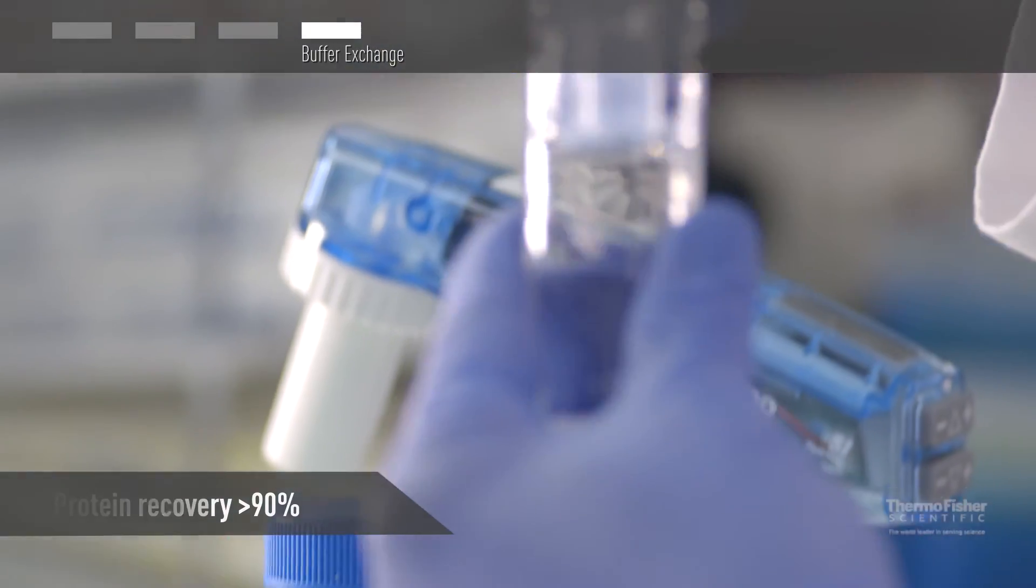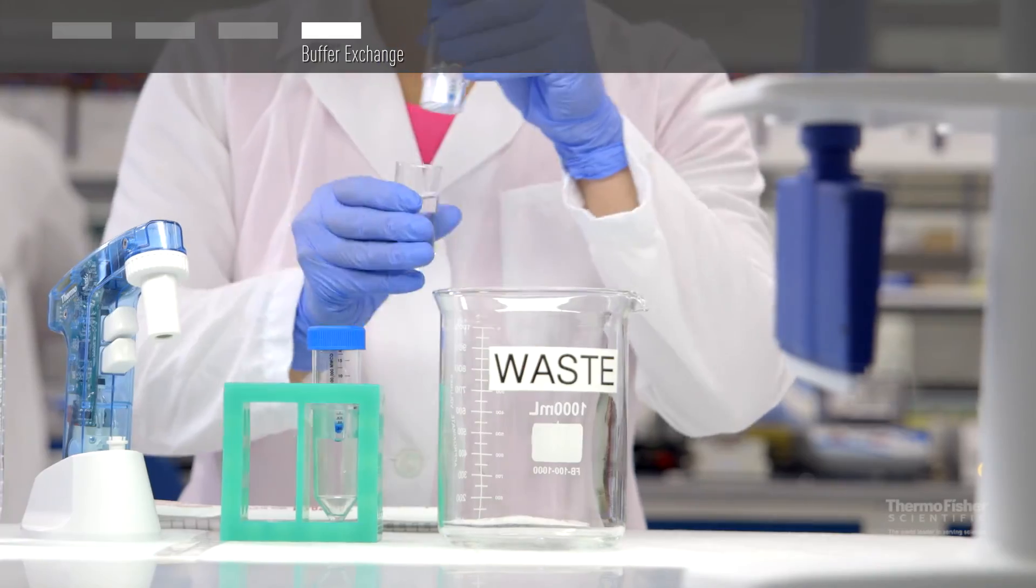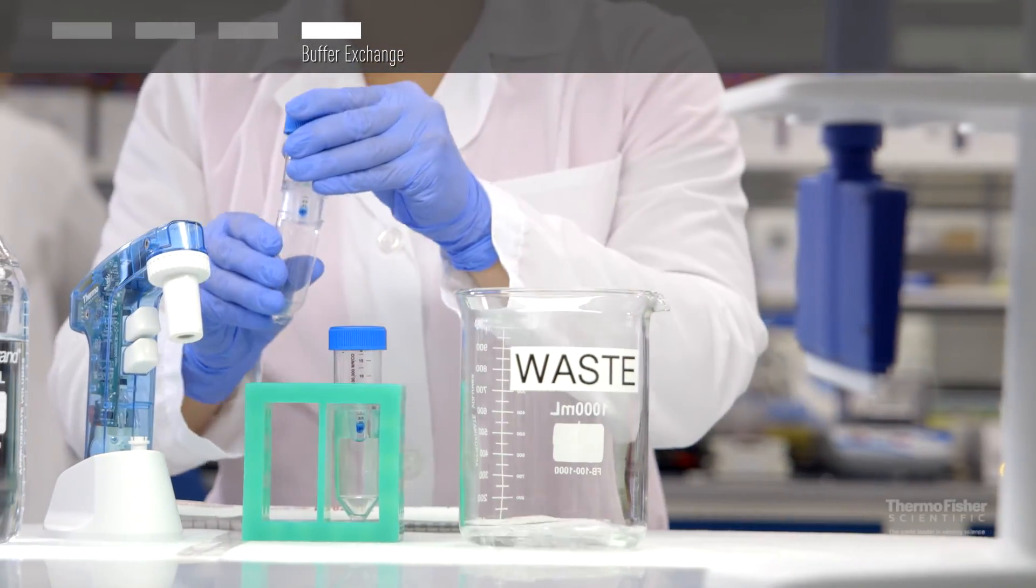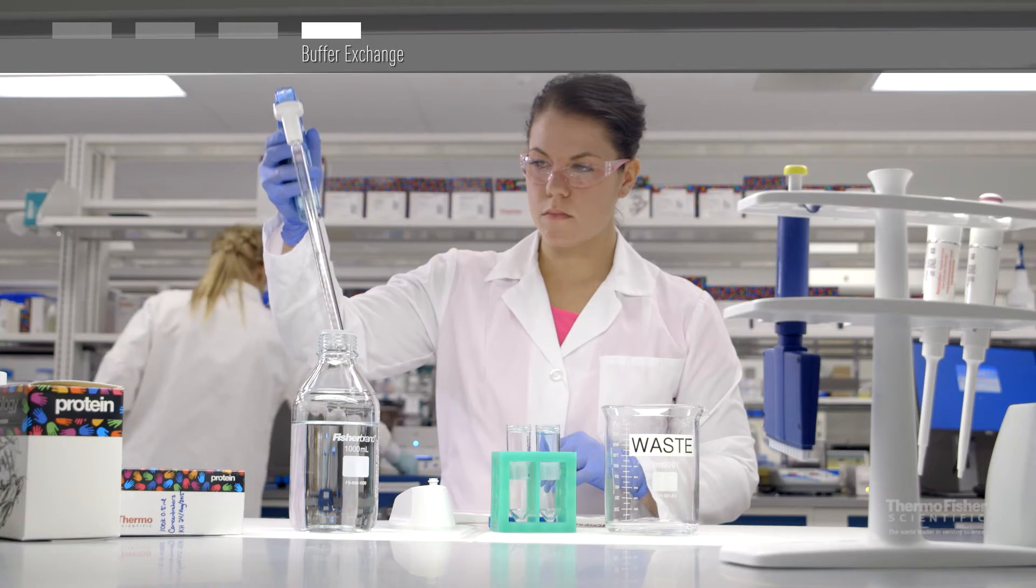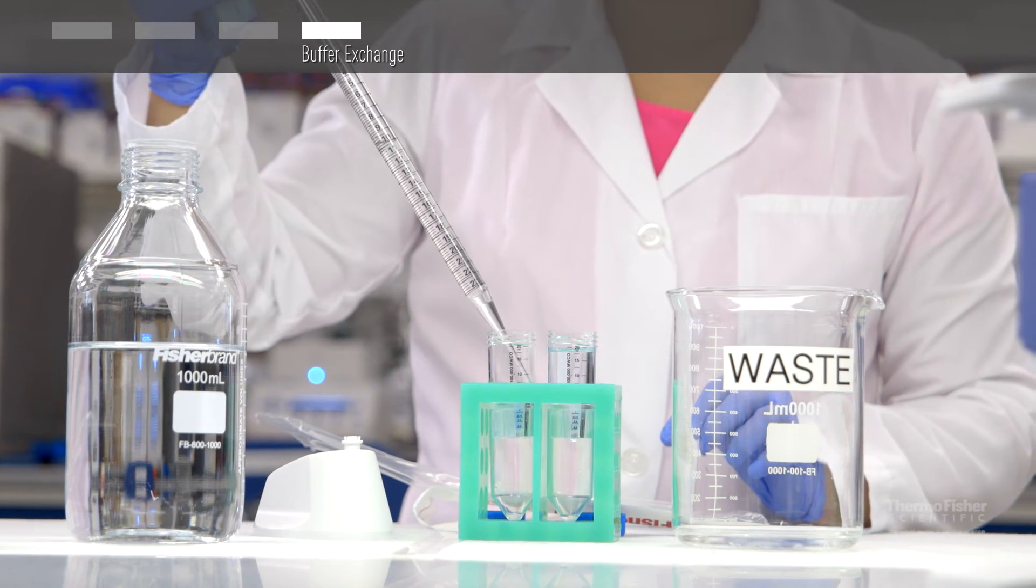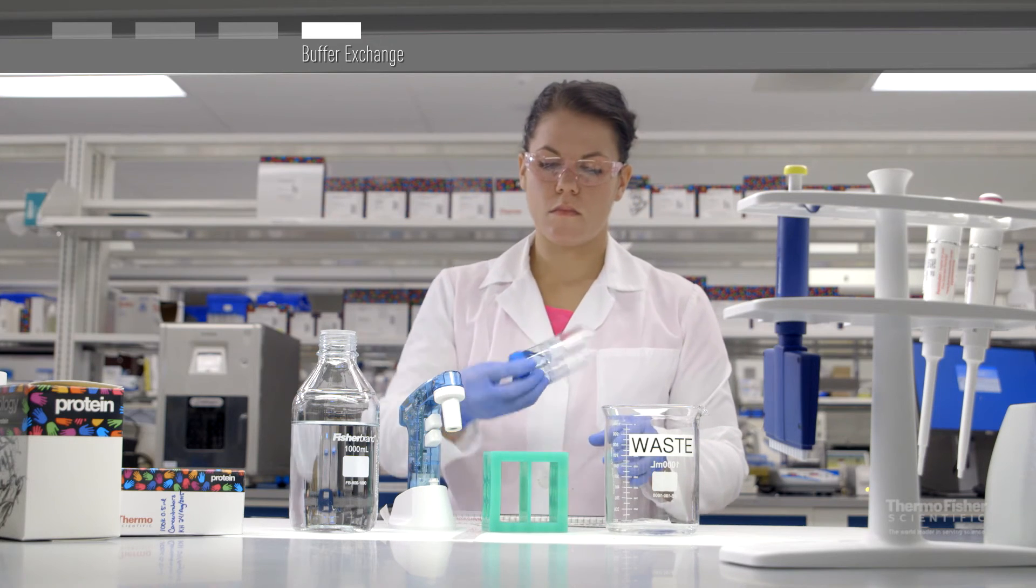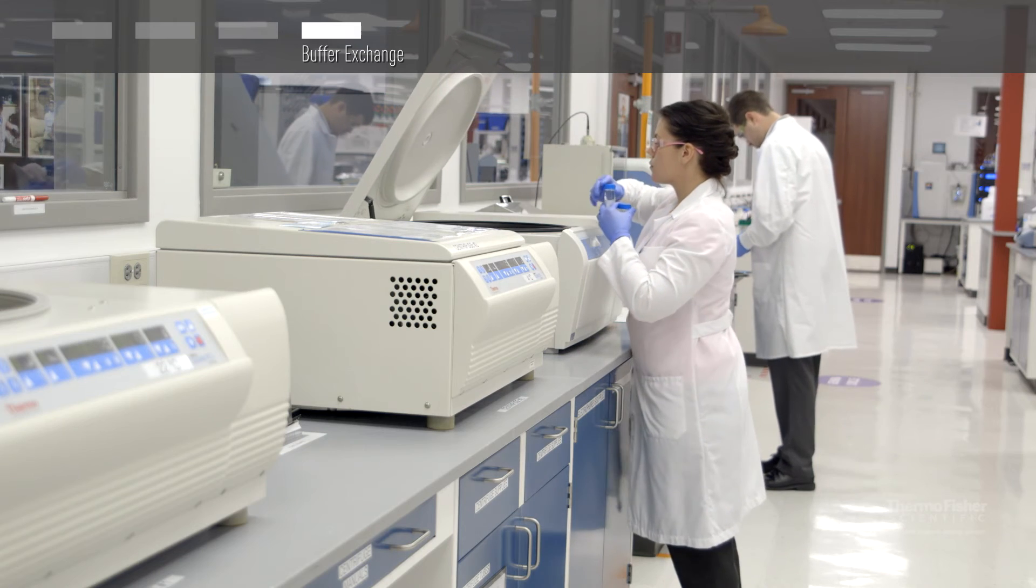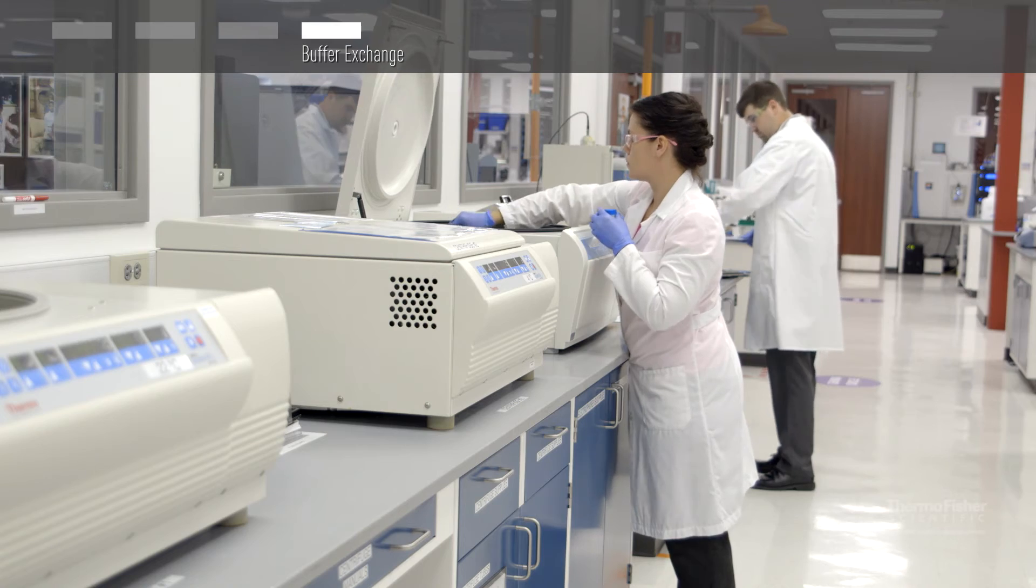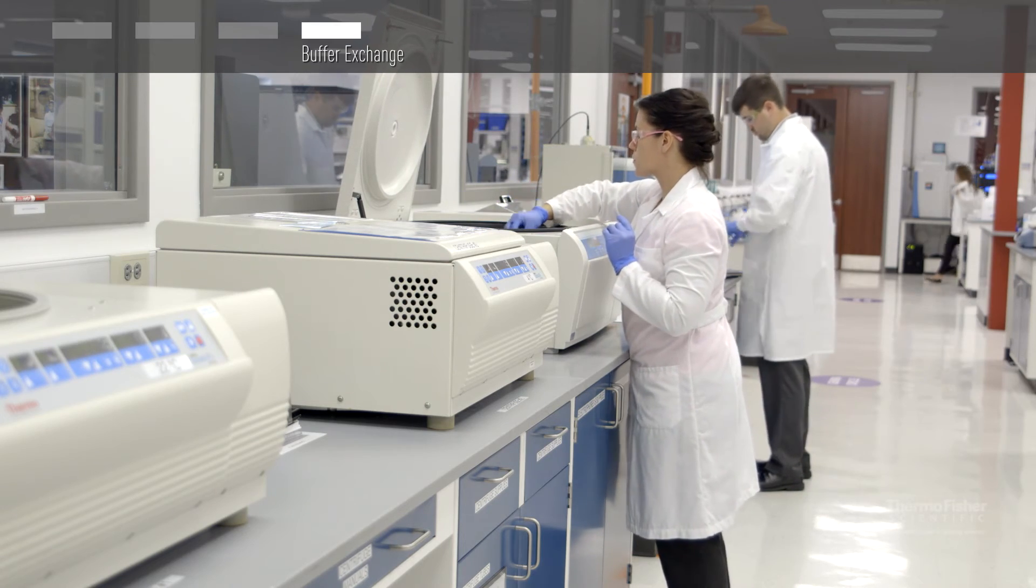If you need to desalt and or buffer exchange your concentrated sample, simply decant the filtrate, reassemble the unit, dilute the retentate to the original volume with exchange buffer, and then cap and mix. Repeat centrifugation followed by addition of exchange buffer until desired solute removal has been achieved.